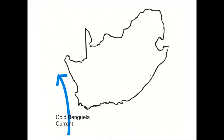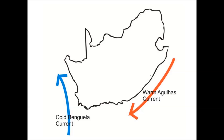Note the cold Benguela Current that runs along the west coast in a northerly direction, and the warm Mozambique Current that later becomes the Agulhas Current as it passes by the south coast.